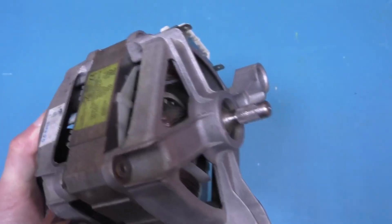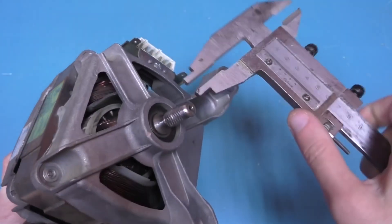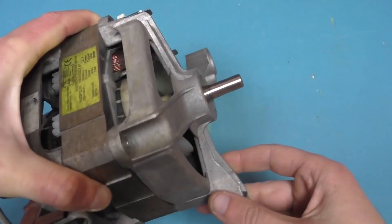I cut off the pulley using an angle grinder, slightly touching the shaft, but that's not a problem since its diameter is 11 millimeters and we need 10. And this is what the shaft looks like after machining.